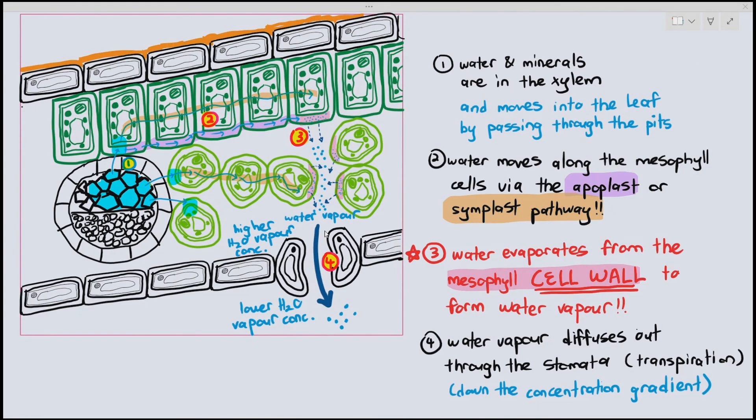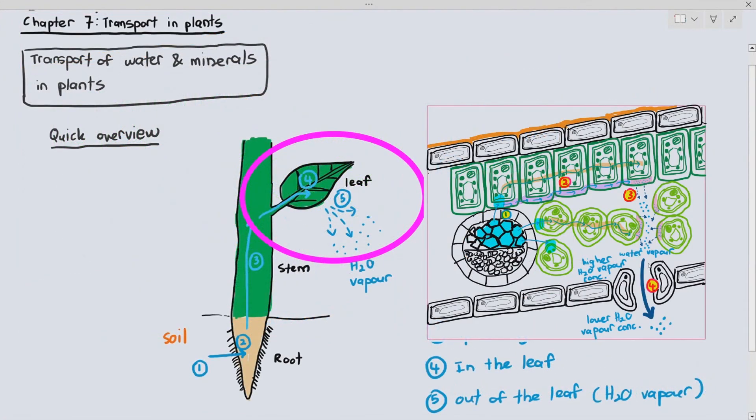But plants can't afford to close the stoma all the time because they do need carbon dioxide to enter the leaf so that the palisade cells and the spongy cells can undergo photosynthesis. So transpiration is an unavoidable consequence of gas exchange. And with that being said, we are done with the movement of water and minerals in the leaf and the movement of water vapor out of the leaf through transpiration.